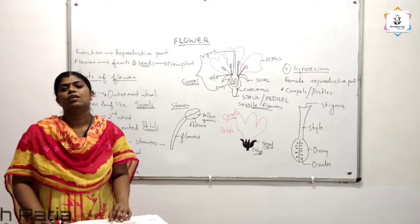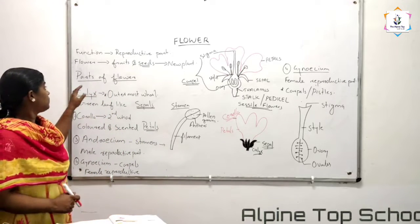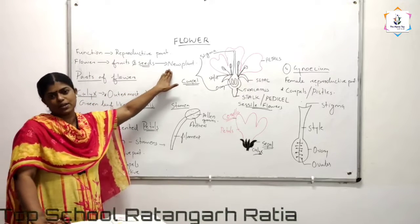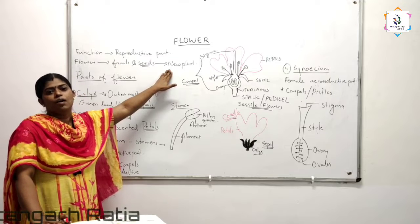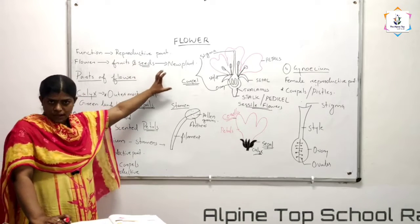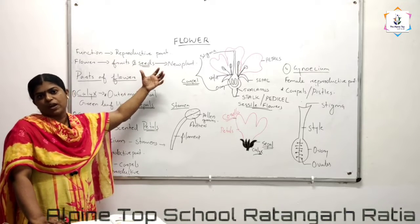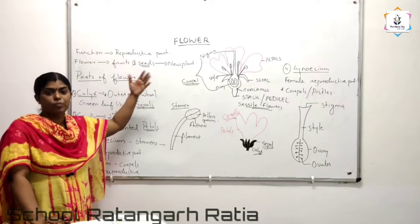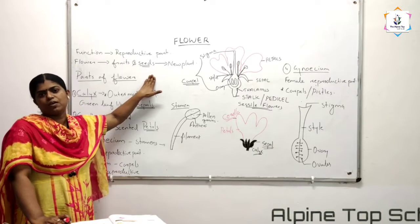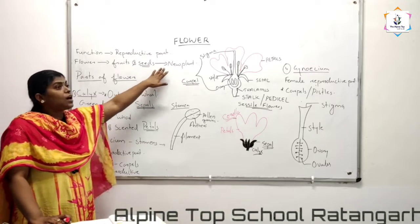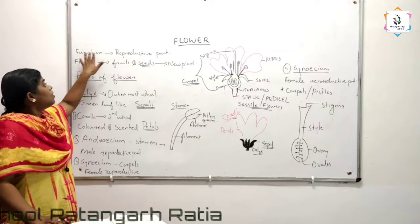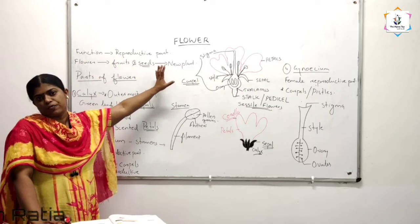What is the function of the flower in a plant? Flowers are making the fruits and the seeds. From the seeds the new plant is arising. Almost all the time we are getting the new plant from the seeds. And if you are getting a new organism from a plant organism, what we are calling that process in biology? We are calling it as reproduction. So flowers are the reproductive part of a plant.